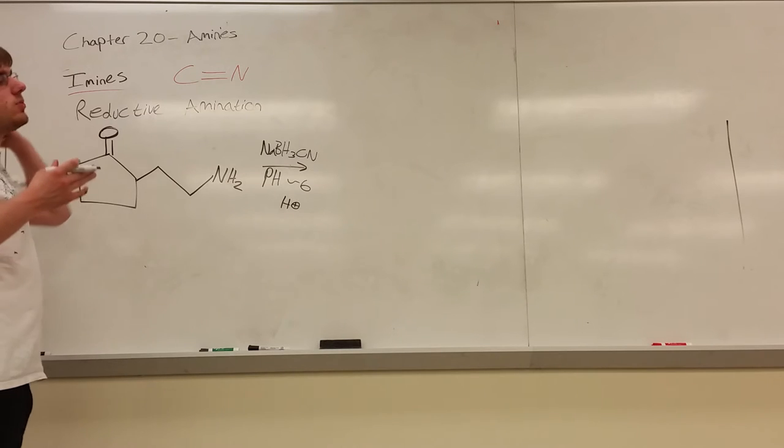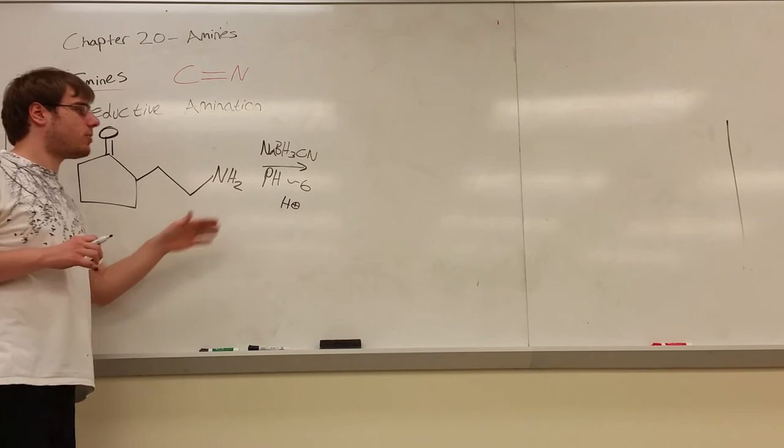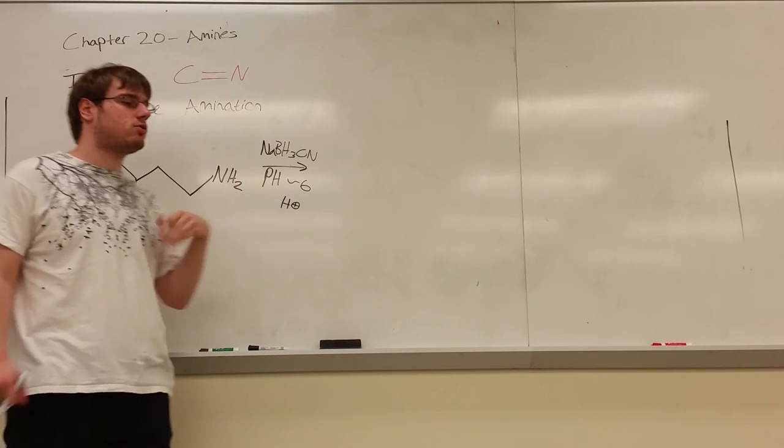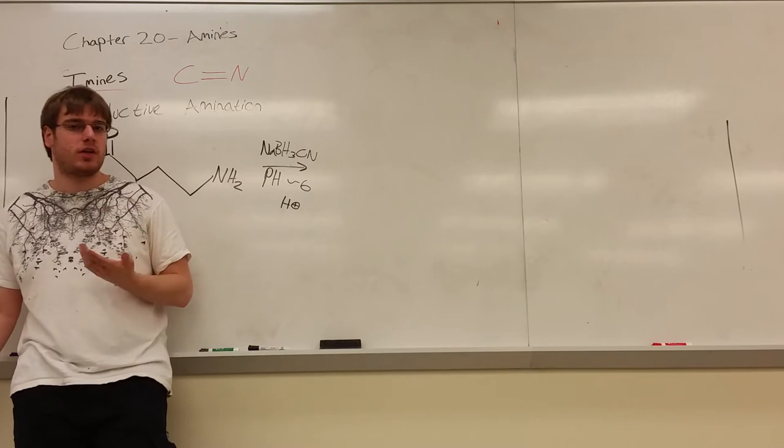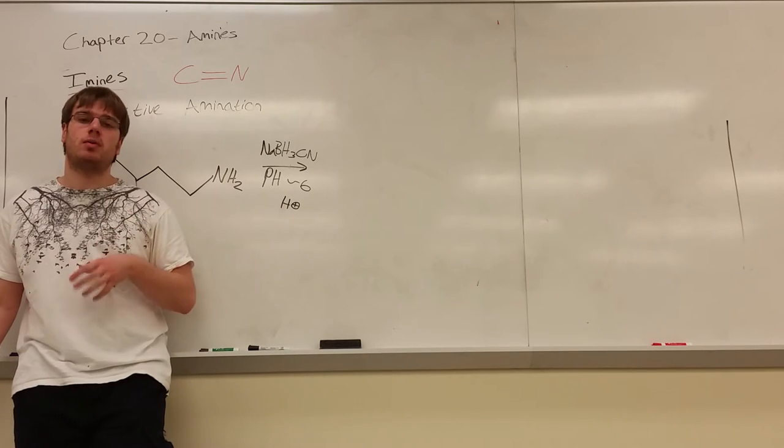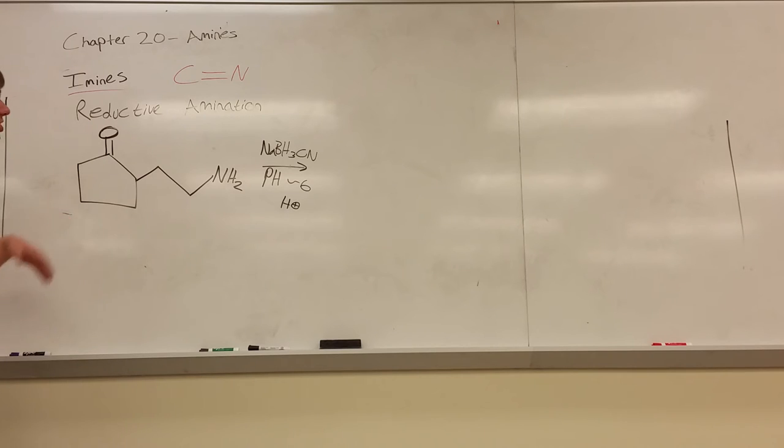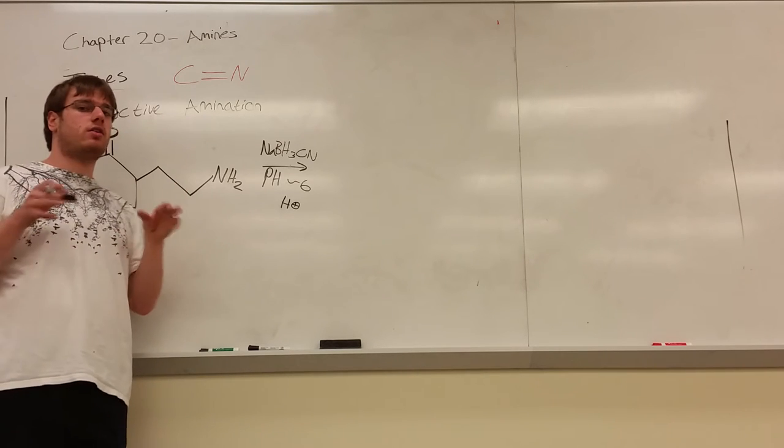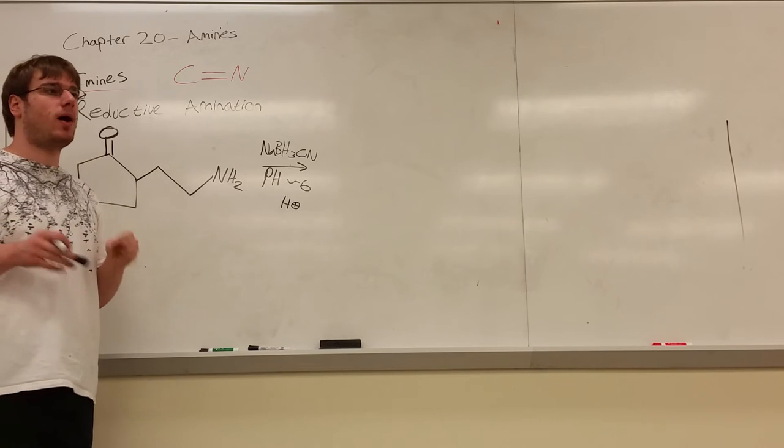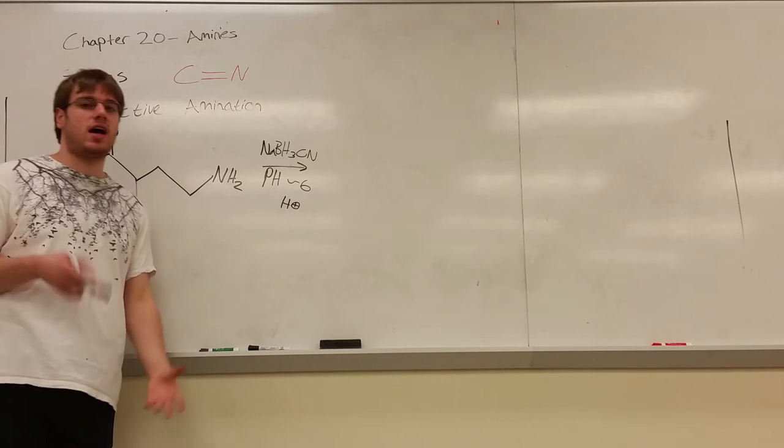So what is going to happen? What should be my major product? Well, let's first start by looking at what's over the arrow, NABH3CN. Now, we said the only time you're really going to see that is if you're dealing with C double bond N. But we look at the structure, and there's no C double bond N. So what are we doing?